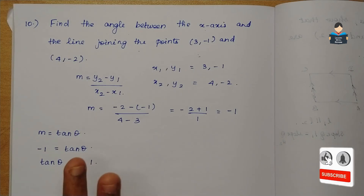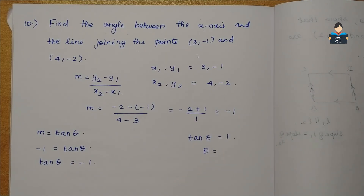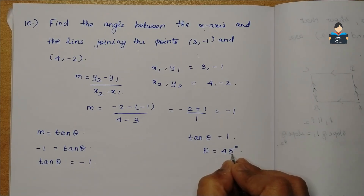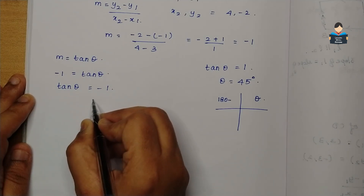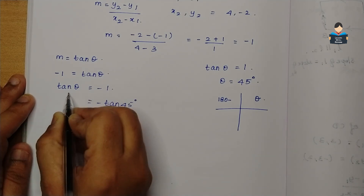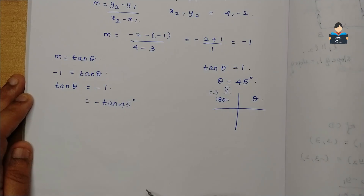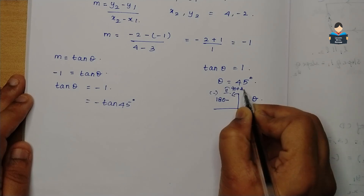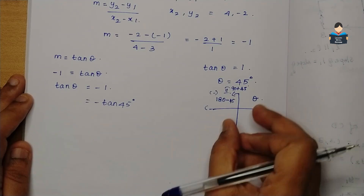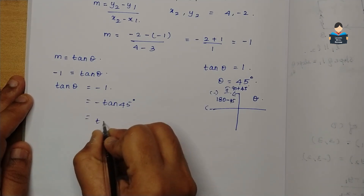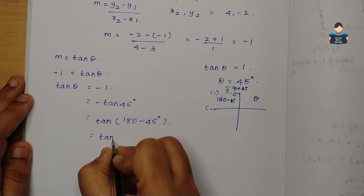Now minus 1 is a negative value. The value of tan theta equal to 1 corresponds to 45 degrees, since tan 45 is 1. Now tan theta equals minus 1, so we have minus of tan 45 degree. Here tan theta equals tan of 180 minus 45, which is tan 135 degree.